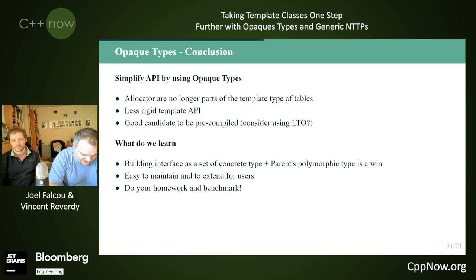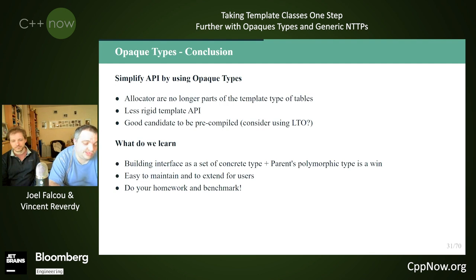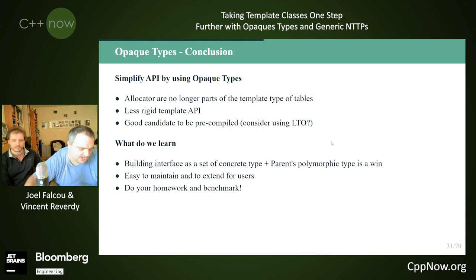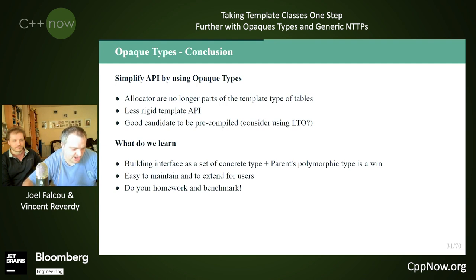We were quite surprised by the fact that we can get something meaningful using Sean Parent's opaque types idea — something that is easy to maintain and trivial to explain to users when they want to make a new allocator. But yeah, we need benchmarking because that's not necessarily triggering in all cases. So we have some questions: why not just use std::pmr for type-erased allocation?